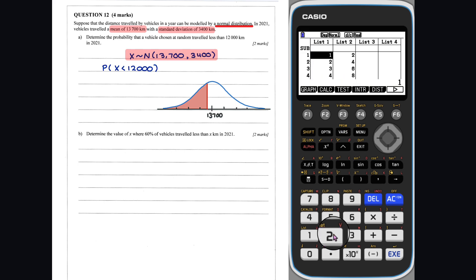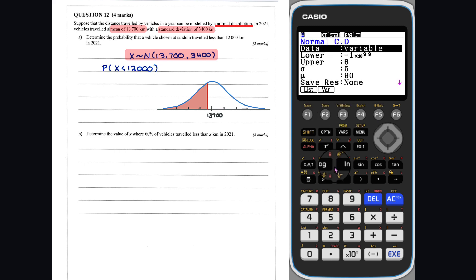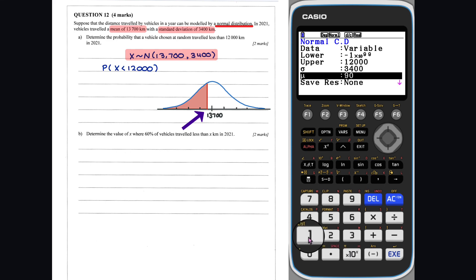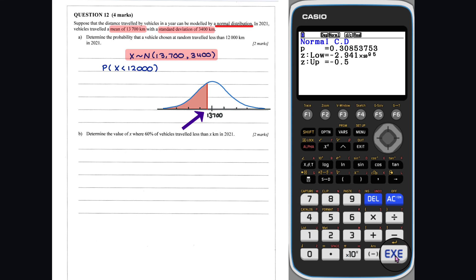So we press normal, then NCD. Our lower tau is negative 1 times 10 to the 99, the upper is 12,000, and our standard deviation and mean are as given above. Thus, the probability that the randomly chosen car has traveled less than 12,000km is 0.3085.